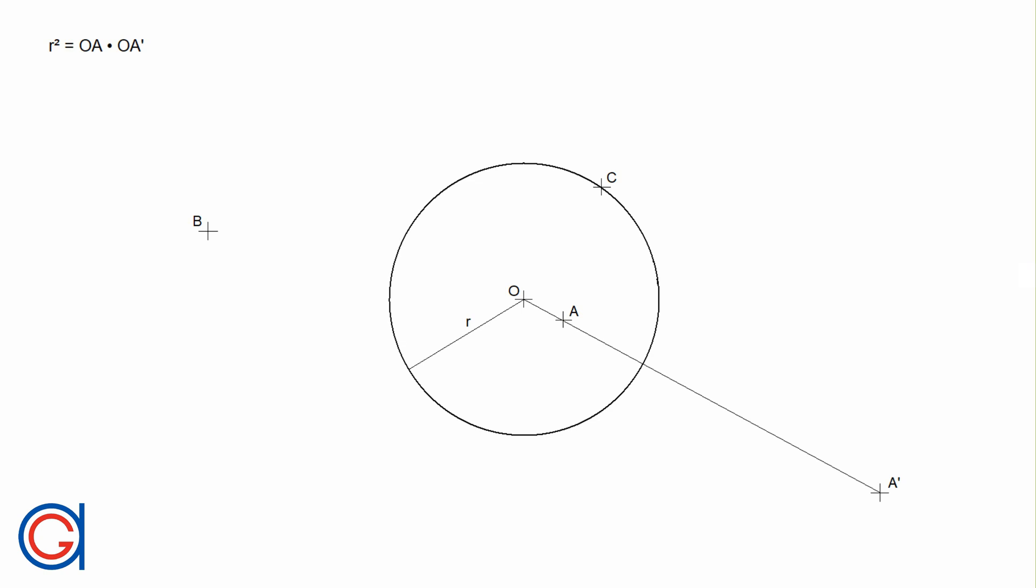In our video today we are going to locate the inverse of three different given points. One point A which is located inside the given circle, one point B which is located outside the given circle, and finally one point C which is located on the circumference.